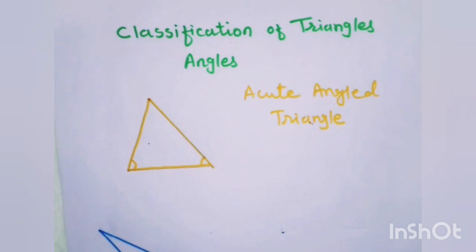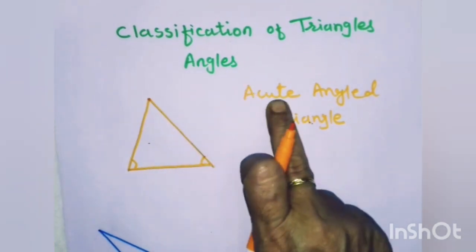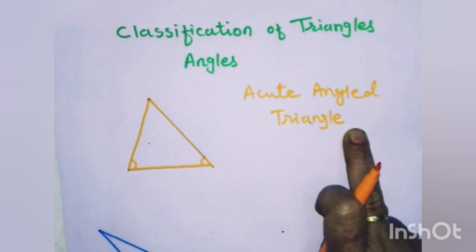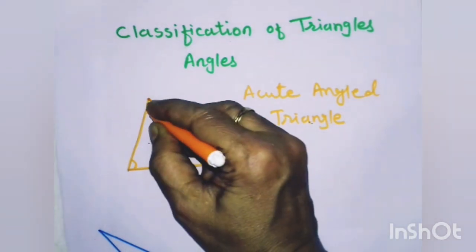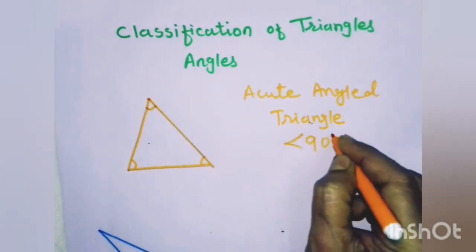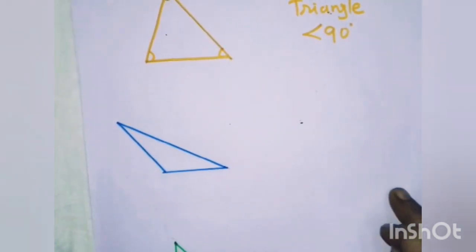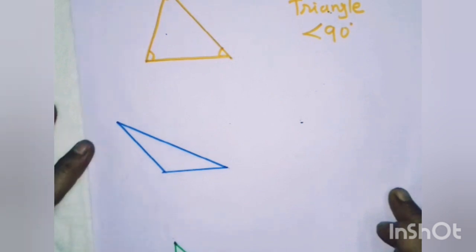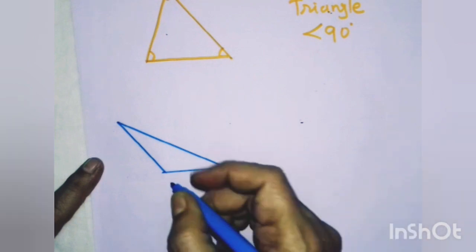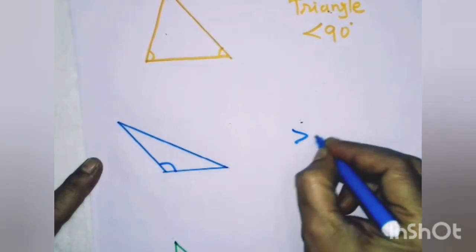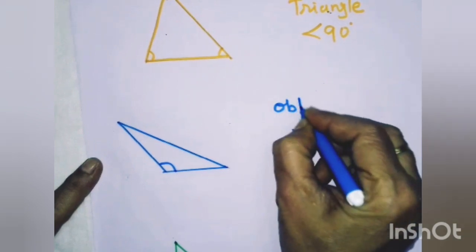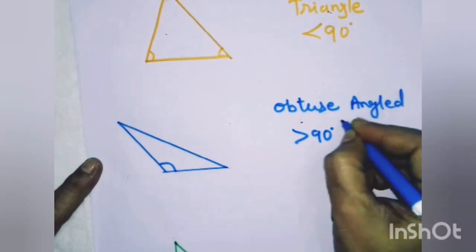The first one is acute angled triangle. A triangle in which the measure of all 3 angles are less than 90 degrees is known as an acute angled triangle. The next one is obtuse angled triangle. A triangle in which the measure of one of the angles is greater than 90 degrees is known as an obtuse angled triangle.